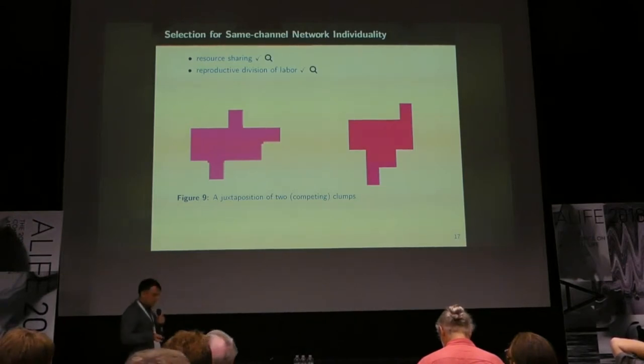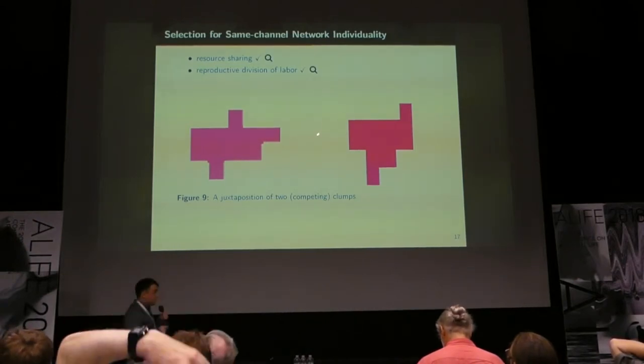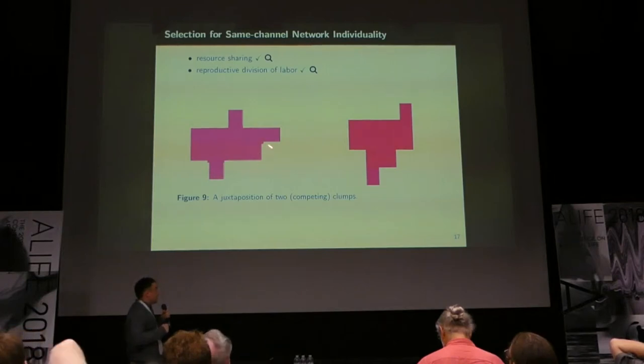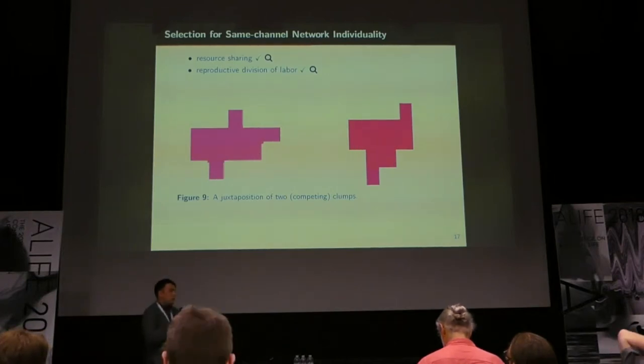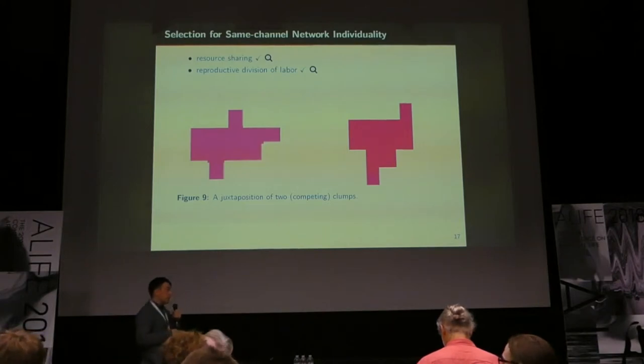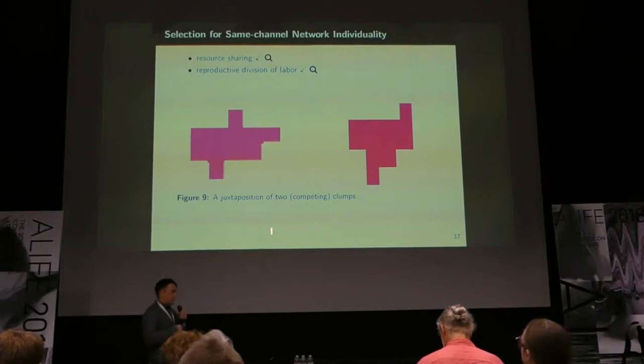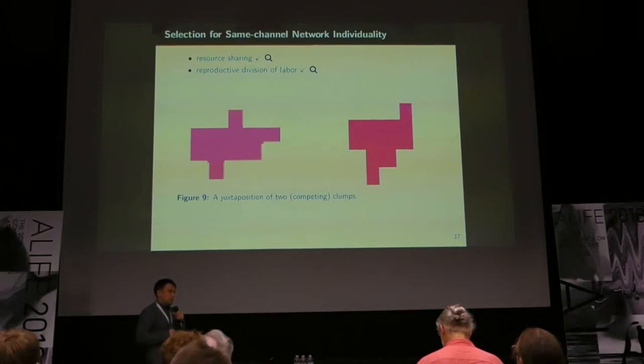And importantly, because we've explicitly defined the sets of cells that we expect to be basically cooperating and becoming an individual in and of themselves, it becomes really easy to look for and detect resource sharing within the same channel network, and it becomes really easy to look for reproductive division of labor within the same channel network.